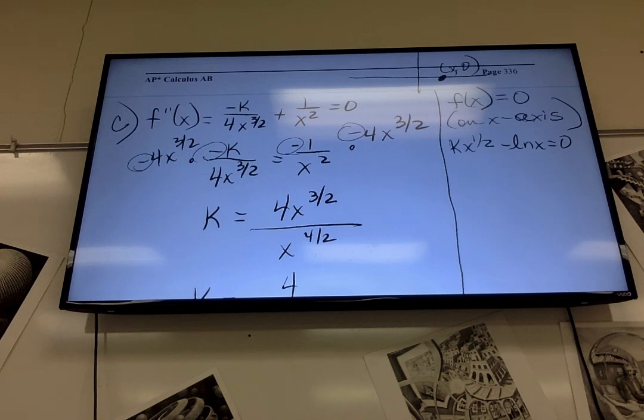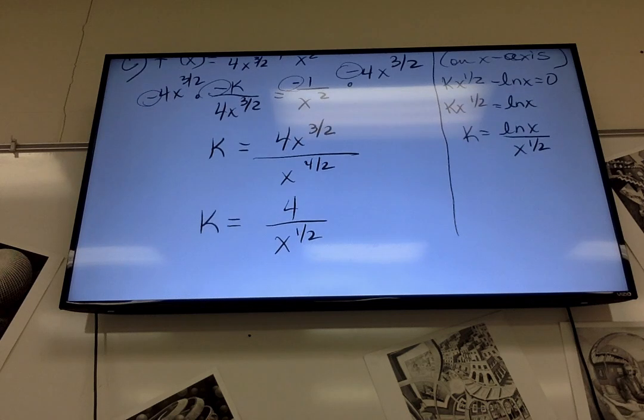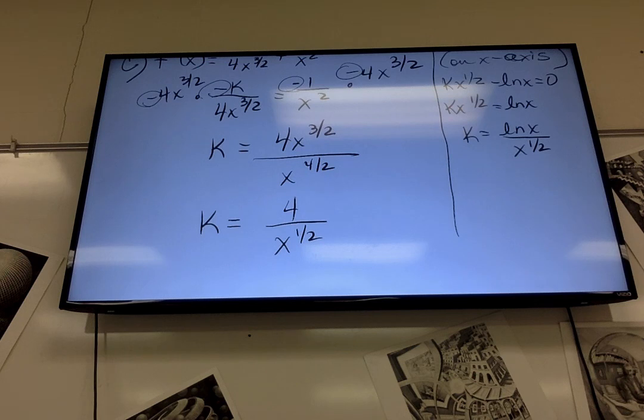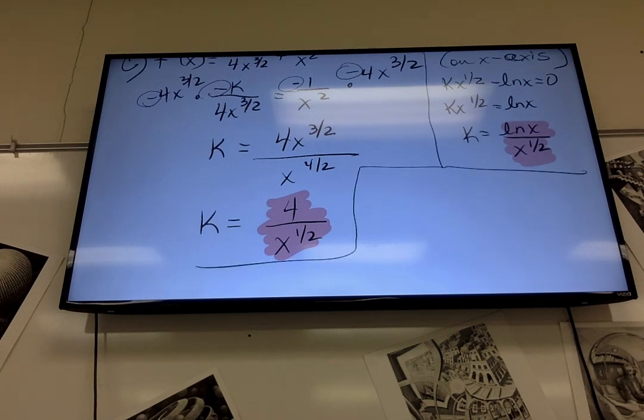So let's see here. I'm going to add natural log of x to both sides. And divide by x to the 1 half. So now notice this is k and this is k. So what am I going to do to find k? Plug it in. I'm going to set those two things equal to each other. 4 over x to the 1 half equals natural log of x over x to the 1 half.